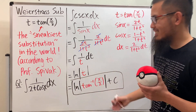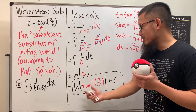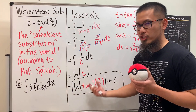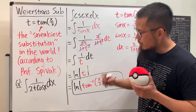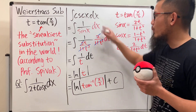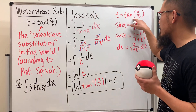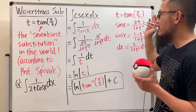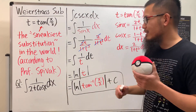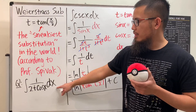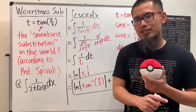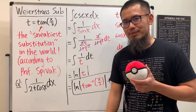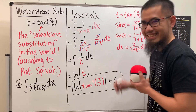Since t = tan(x/2), the final answer is ln|tan(x/2)| + C. If you want to verify by differentiation, the chain rule is required at exactly the step corresponding to the substitution — showing the beautiful connection between the chain rule and u-substitution. The integral of 2 plus cosine x will be worked out on a separate channel.